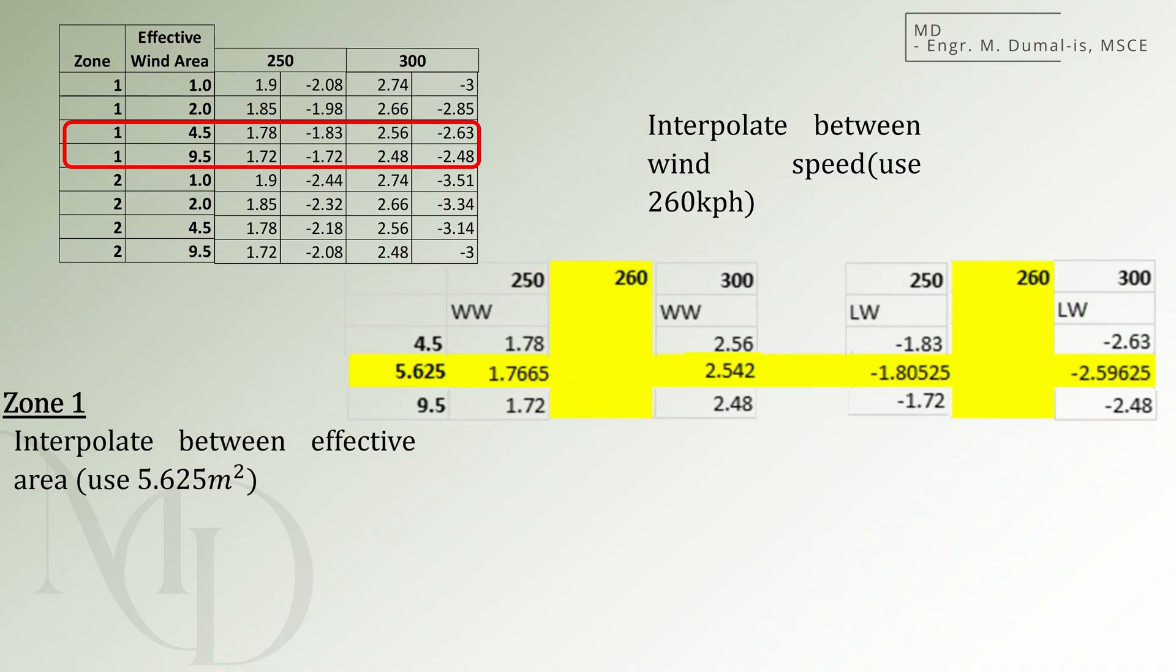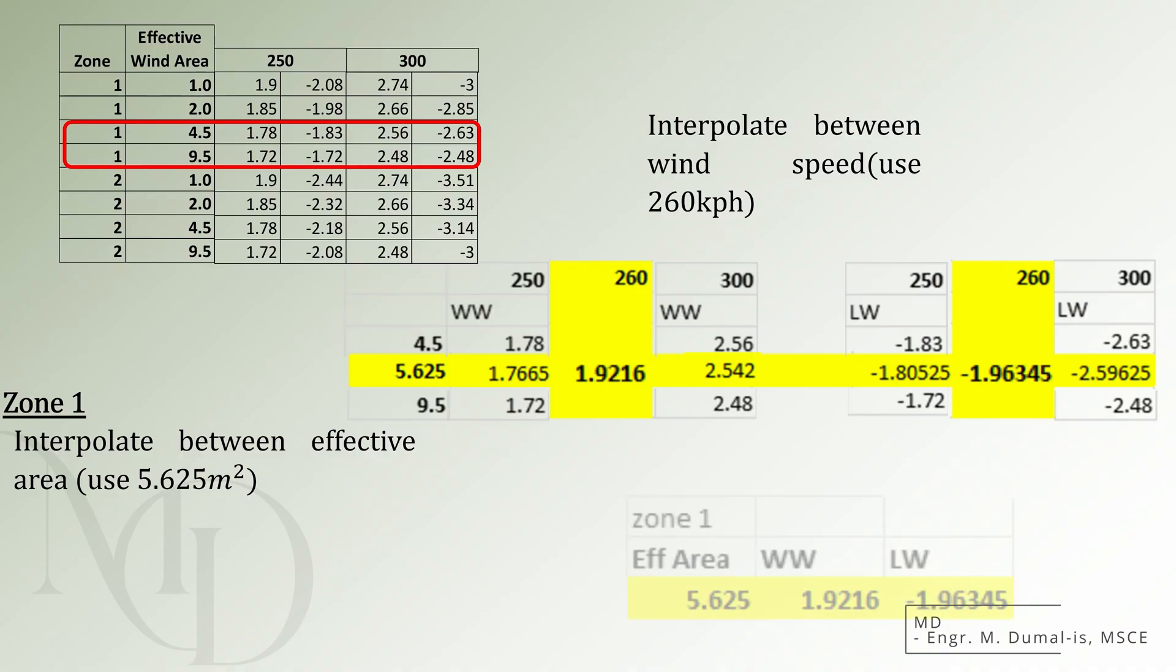So, after completing the interpolation for the effective area, we now proceed to interpolate the pressure due to wind speed. However, in this case, we must first combine the windward and leeward values together before performing the interpolation. Now, with a wind speed of 260 kilometers per hour, the windward pressure becomes positive 1.9 kilopascals, while the leeward pressure is negative 1.96 kilopascals. Then, we combine the results in a table to make a summary.